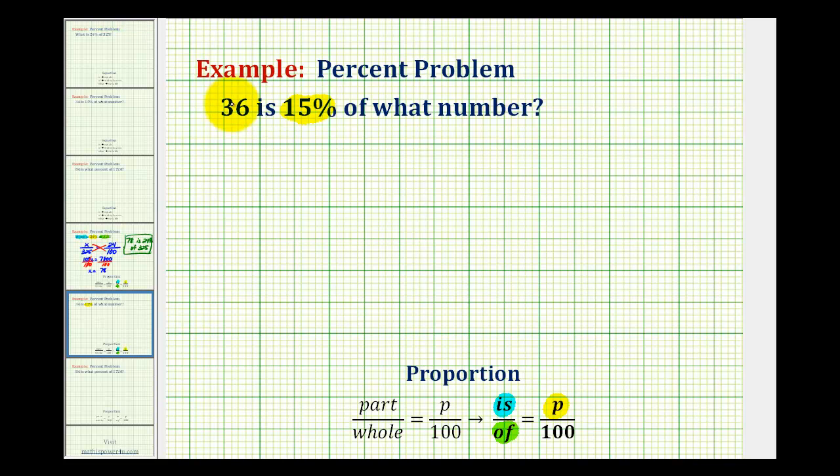Notice how we have 36 next to 'is' here, which means 36 will be in the numerator of the other ratio. Then we have 'of what' or 'of what number', which tells us the number associated with 'of' is the unknown, so we'll use a variable here in the denominator.